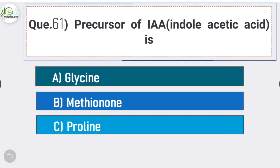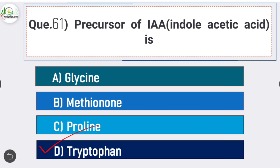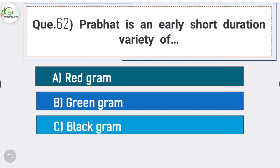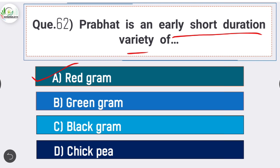Question number sixty-one: precursor of IAA is - answer is option D - tryptophan. Question number sixty-two: Prabhat is an early short duration variety of - answer is option A - red gram. Prabhat is an early short duration variety of red gram.